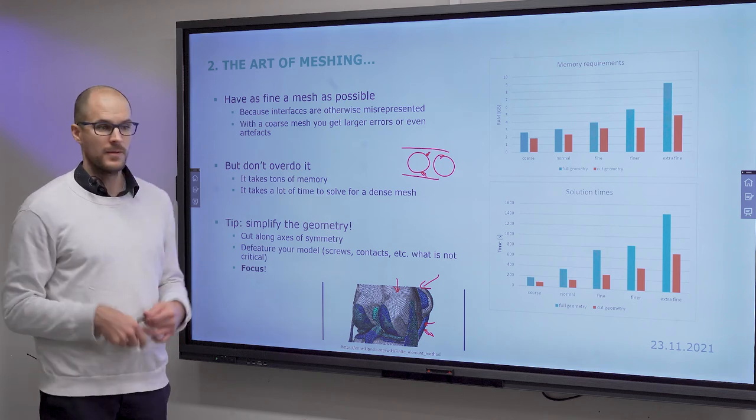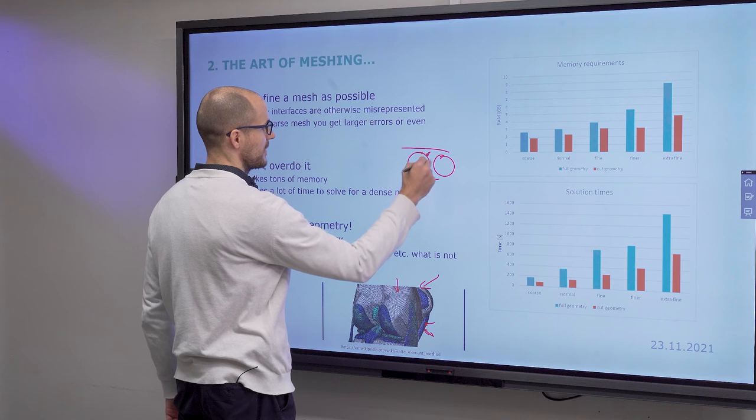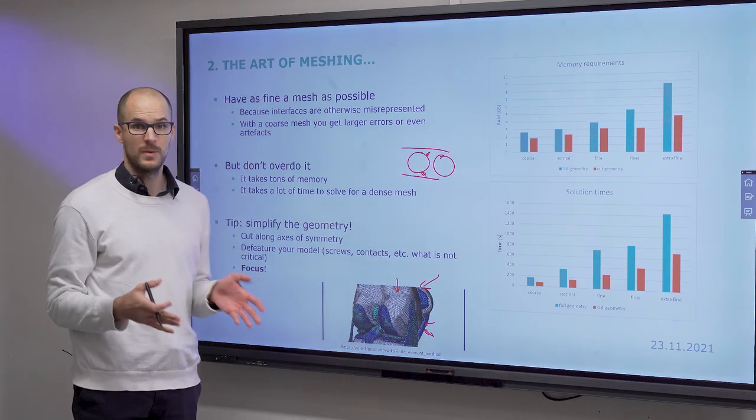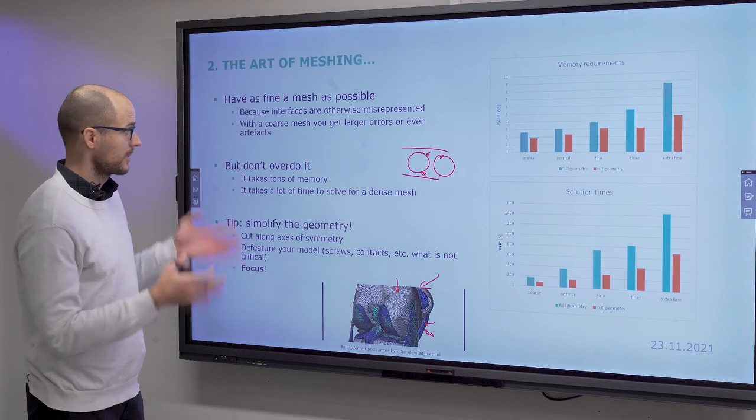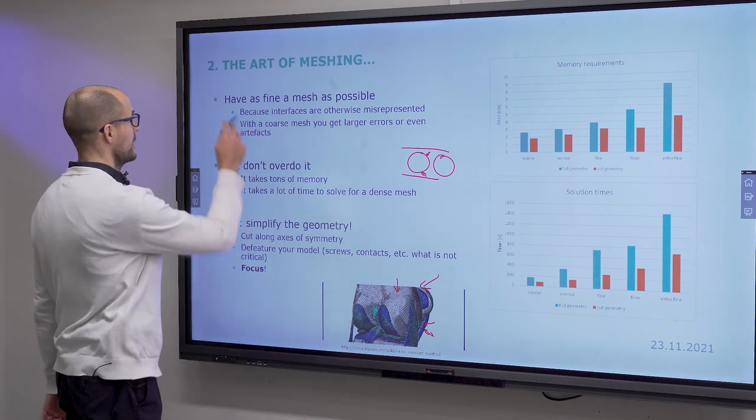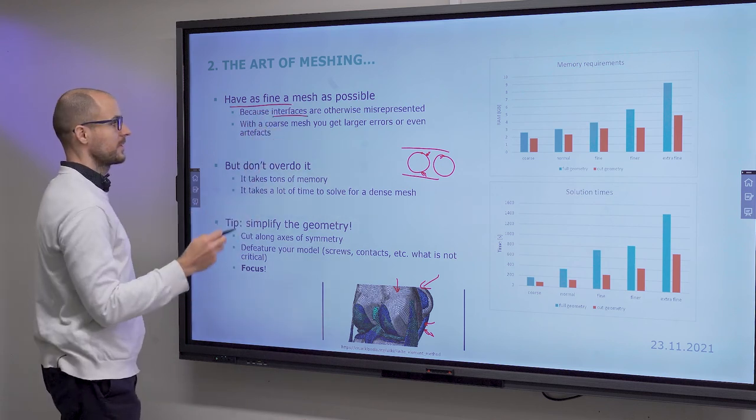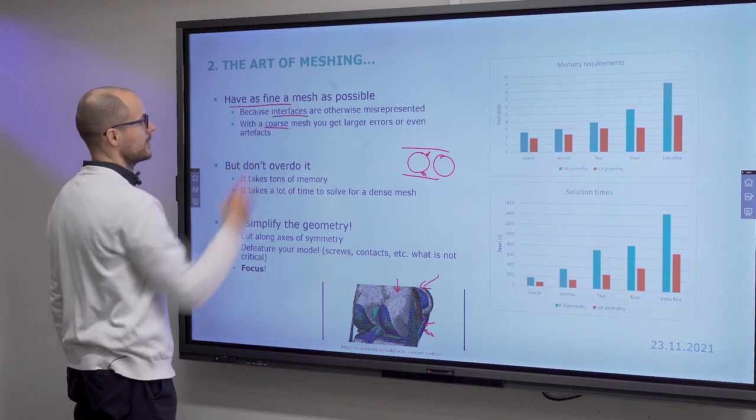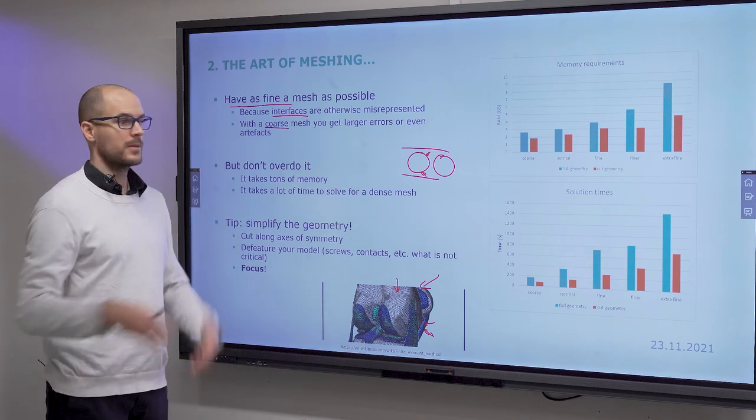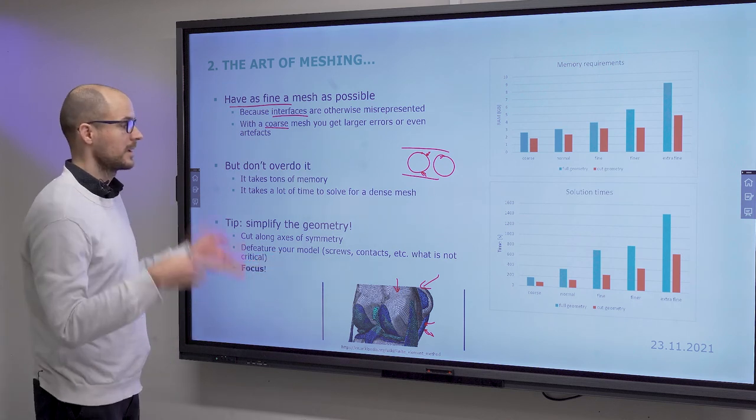This is what's important and this is what you must calculate with the smallest step size that your computer can work with. Because if you take a too large step size, then your boundary will not be very crisp. It will be a diffuse thing, you will not be able to determine where it is. So, you must work with a small enough mesh. This is the art of meshing. And you have to have as fine a mesh as possible, because interfaces will otherwise be misrepresented. And if you have a too coarse mesh, you will get a very large error or you will get artifacts or you will get numerical explosions, divergence. You will not get to a solution.